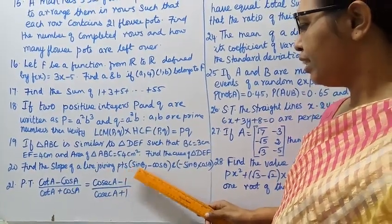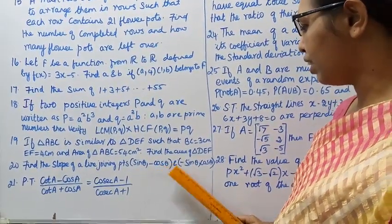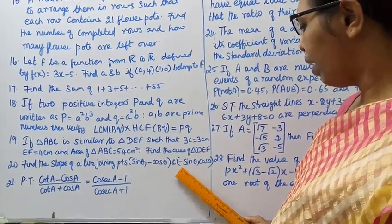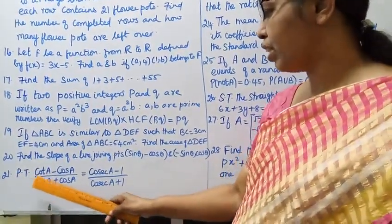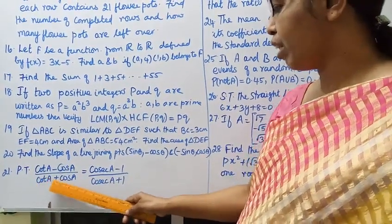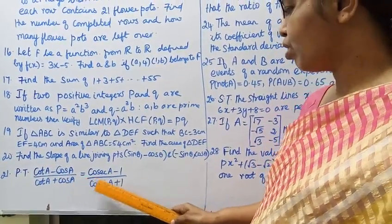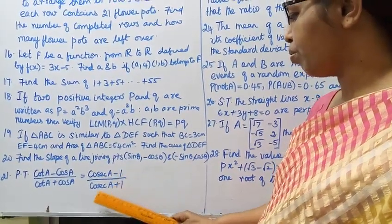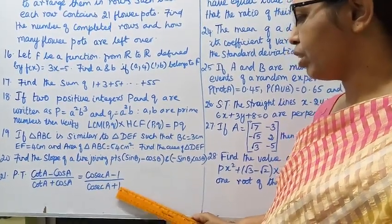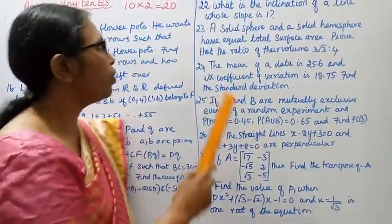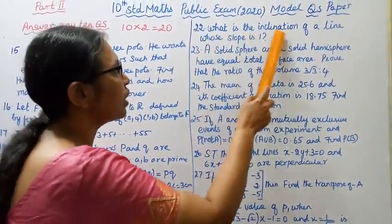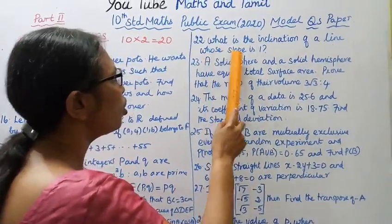Question 21: Prove that (cot A - cos A)/(cot A + cos A) = (cos A - 1)/(cos A + 1). This is a very important trigonometry question. Question 22: What is the inclination of a line whose slope is 1?